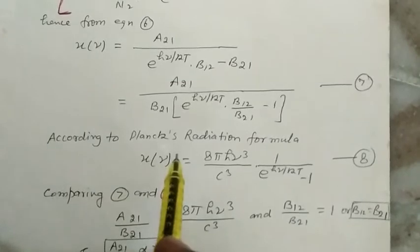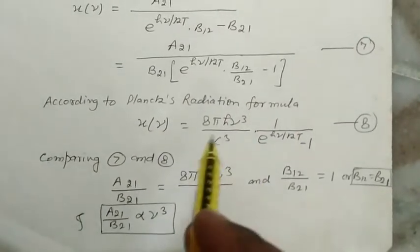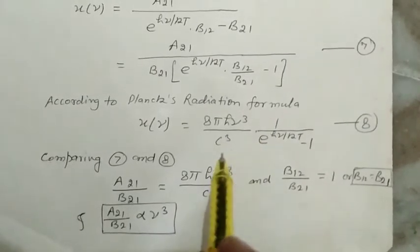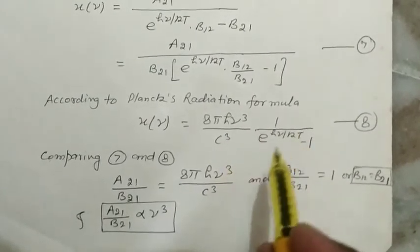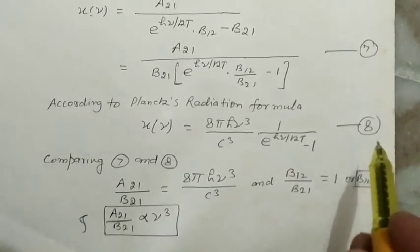According to Planck's Radiation Formula, U(ν) = (8πhν³/c³)/(e^(hν/kT) - 1). This is equation number 8.